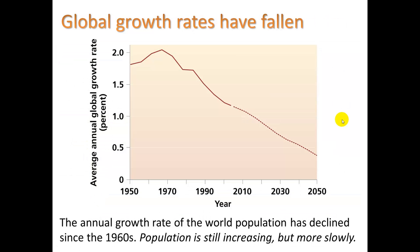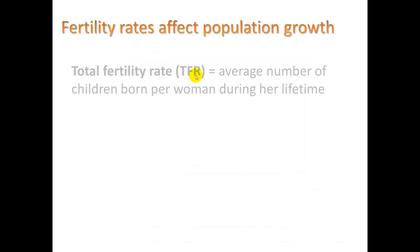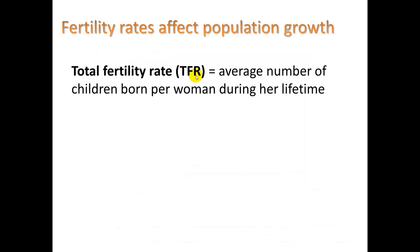This is one thing that can explain lower growth rates: a drop in total fertility rates. Total fertility rate, or TFR, equals the average number of children born per woman during her lifetime.